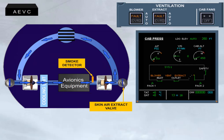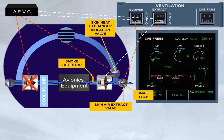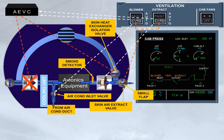In case of smoke detection, both fault lights come on. Setting both push-button switches to override allows the ventilation system to be reconfigured by isolating the skin heat exchanger through the closure of the skin exchanger isolation valve, by stopping the blower fan, by opening the small flap of the skin air extract valve, by transferring the control of the extract fan to the push-button switch, and by adding air from the air conditioning duct through an air conditioning inlet valve.